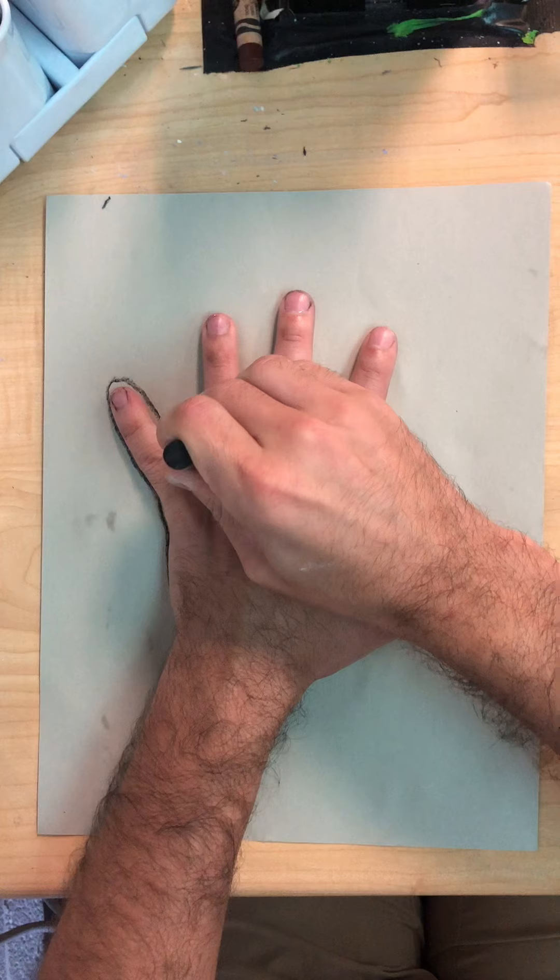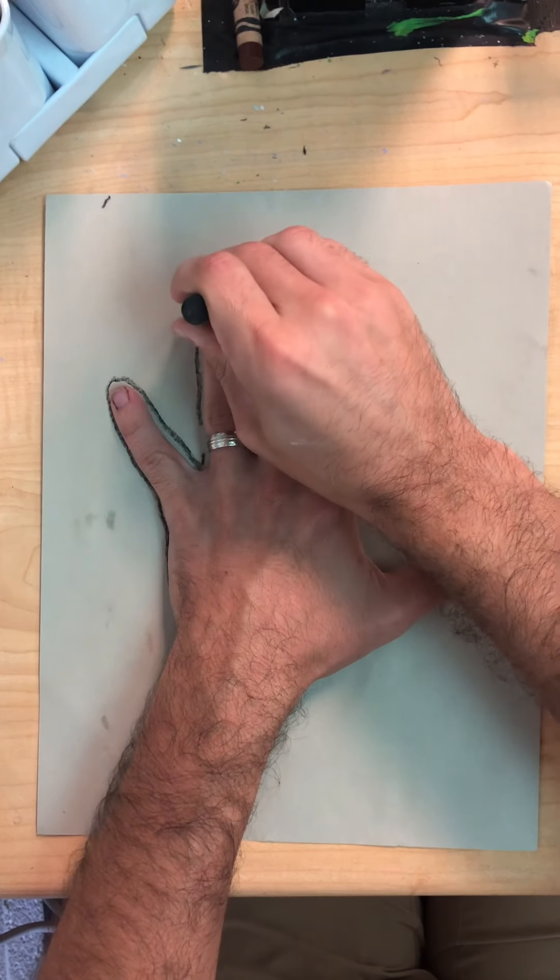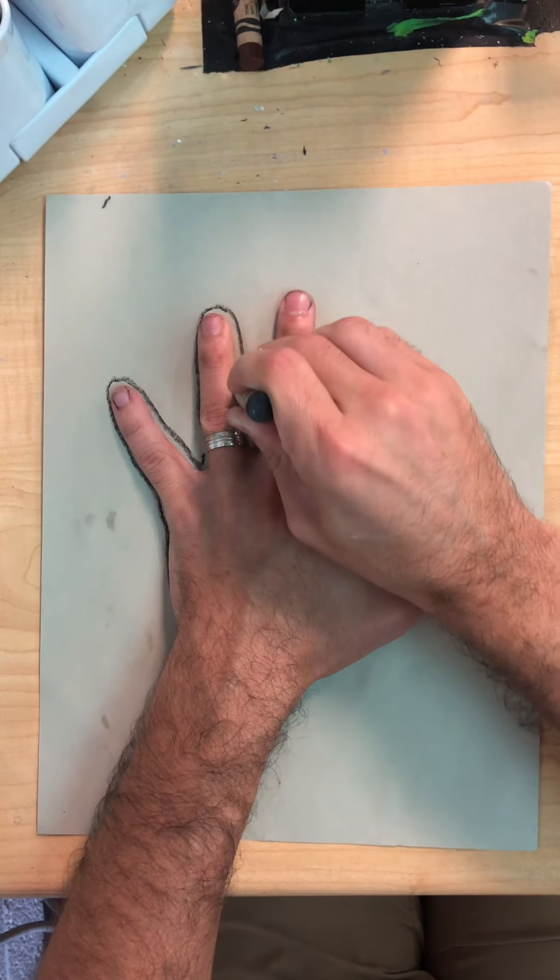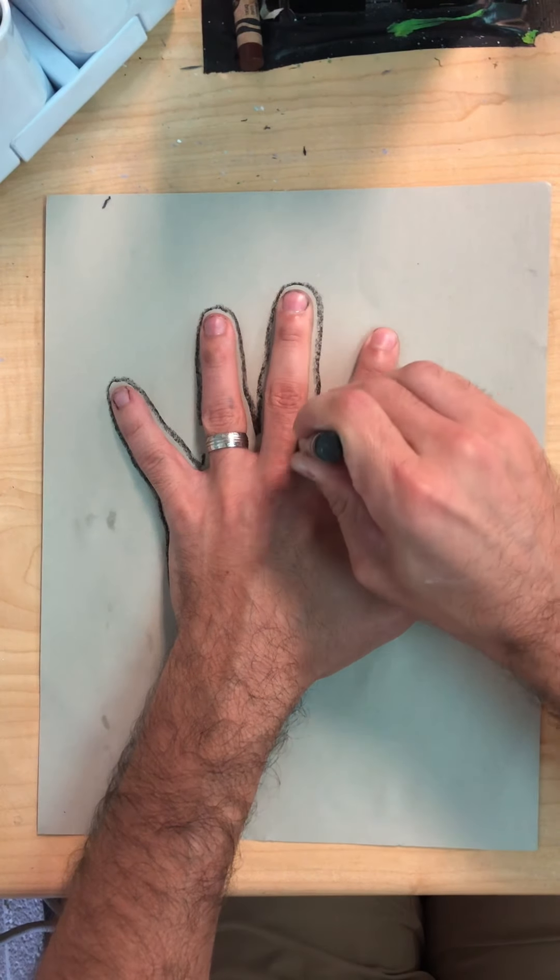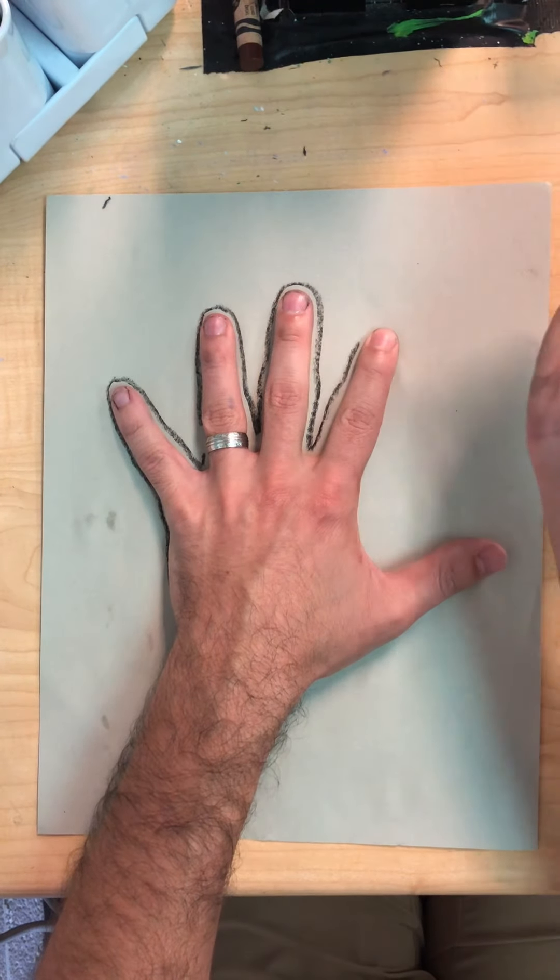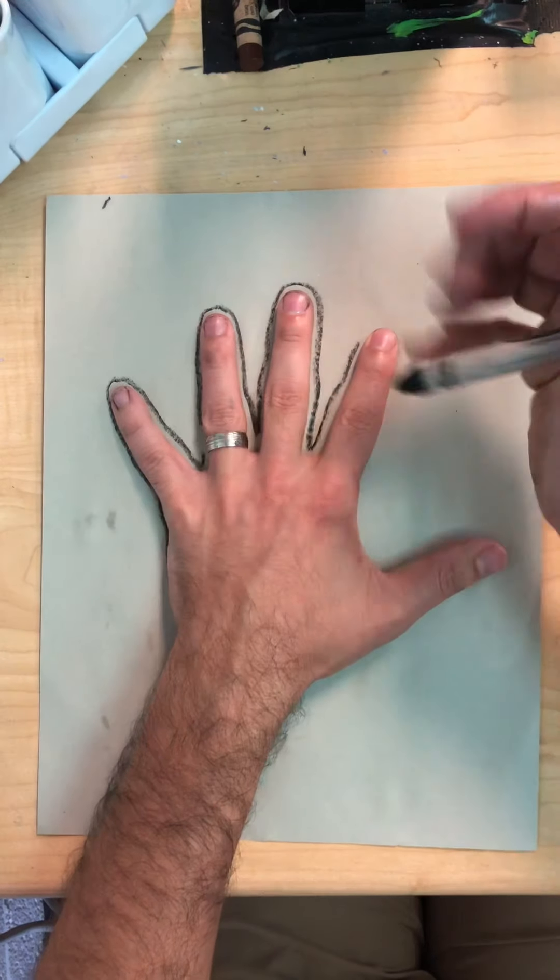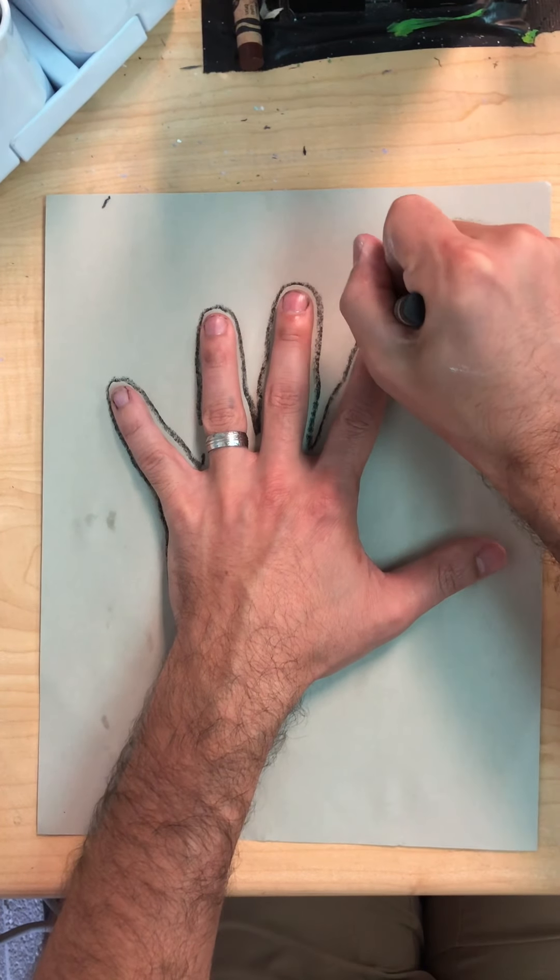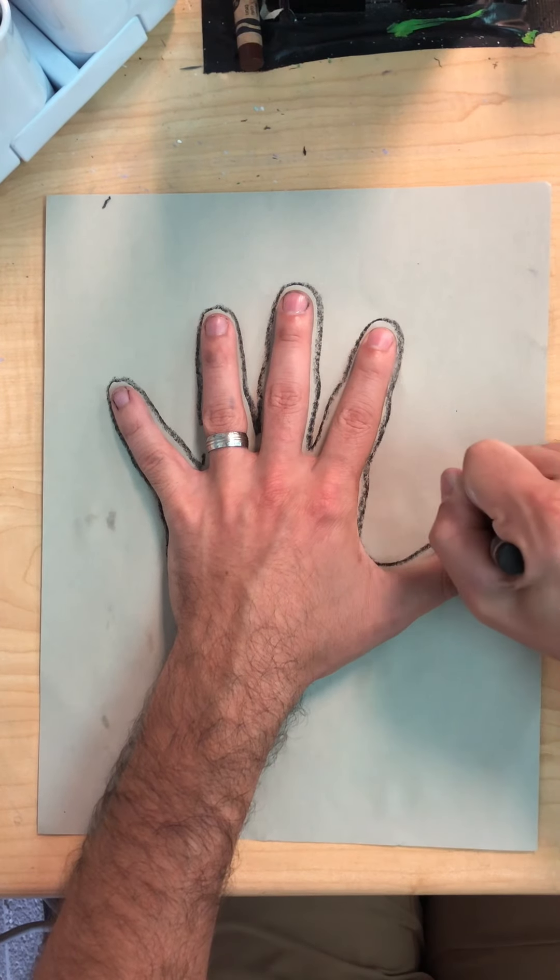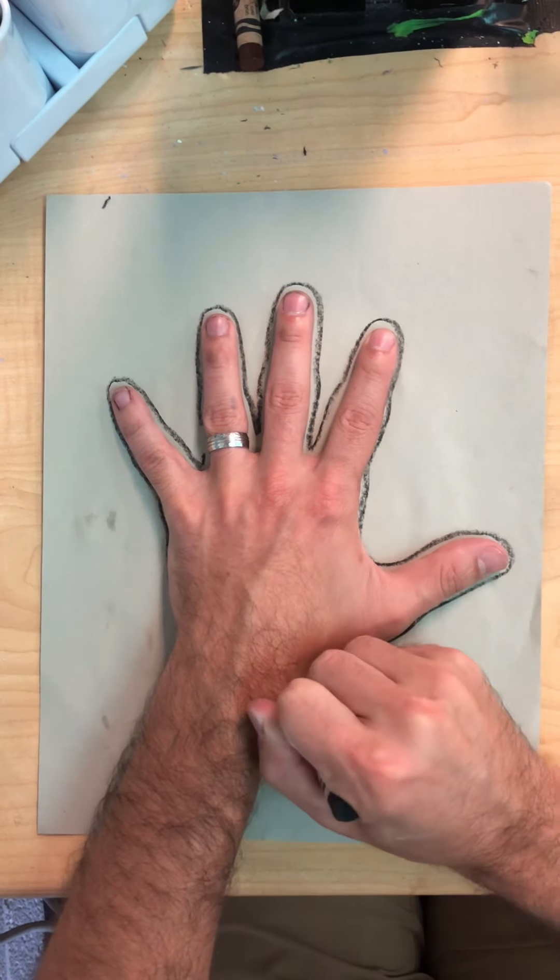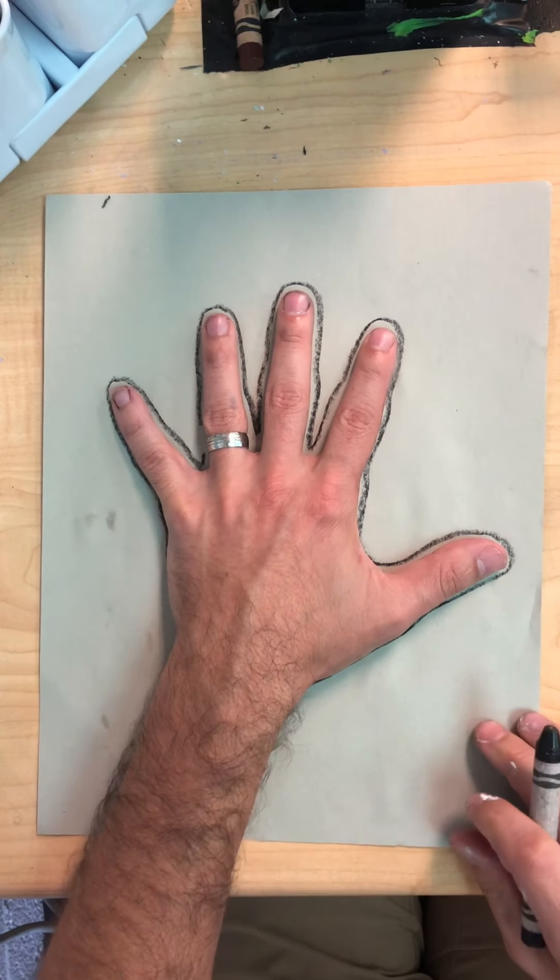It's important that you don't use the crayon to push your fingers around. You control the crayon with the hand that is moving while the hand that is laying flat stays perfectly still. Don't push your fingers around. If you're pushing too hard, you're going to move your fingers and then they're not going to look like a hand anymore.